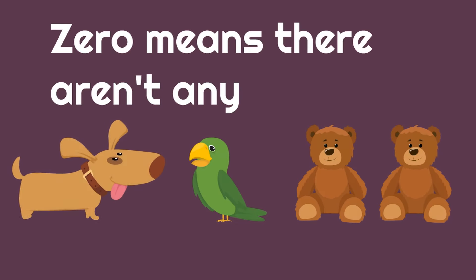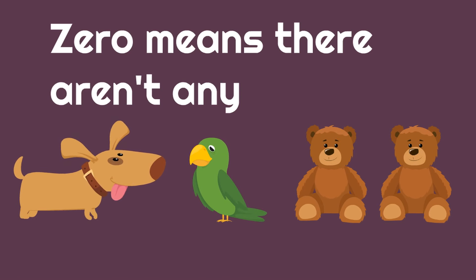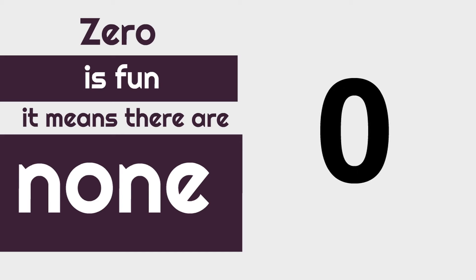Look at this collection we have here. How many birds are there? One. How many dinosaurs are there? You don't see any? That means we have zero dinosaurs. How many teddy bears do we have? Two. How many snakes are there? You don't see any? That means there are zero snakes. There aren't any. Zero means there are none.